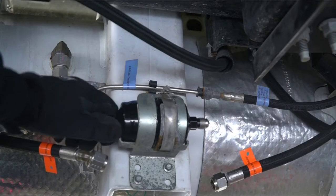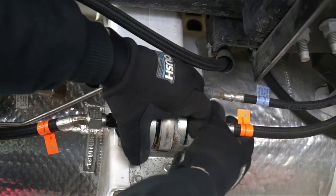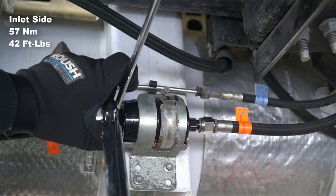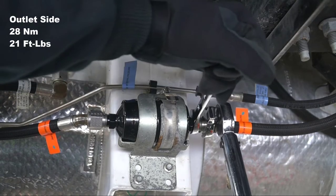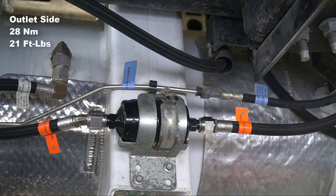Install the new filter and tighten the mounting clamp. Hand tighten the two fuel lines to either end of the fuel filter. Torque the inlet side of the filter to 57 Nm, 42 ft-lbs. Torque the outlet side of the fuel filter to 28 Nm, 21 ft-lbs.